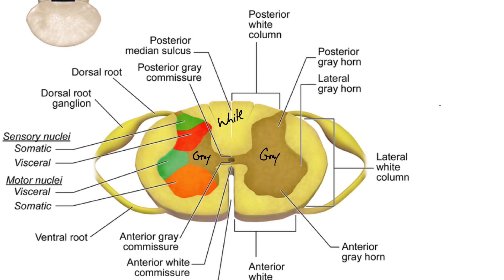All of the surrounding tissue is all white matter. And also like the brain, white matter is really just a bunch of mostly myelinated axons, which is why it looks white.